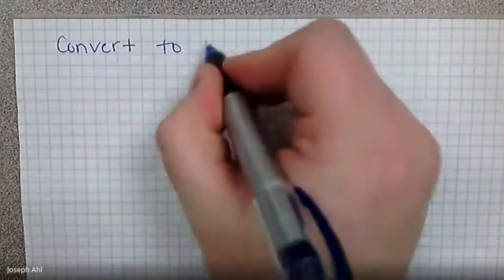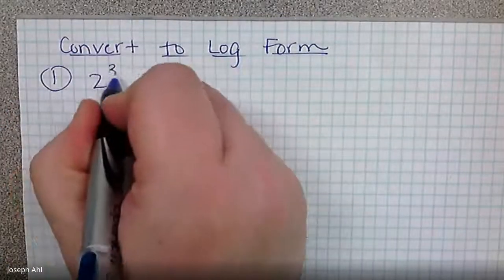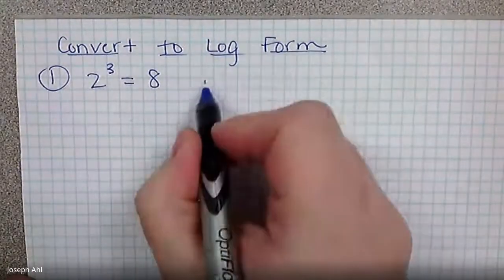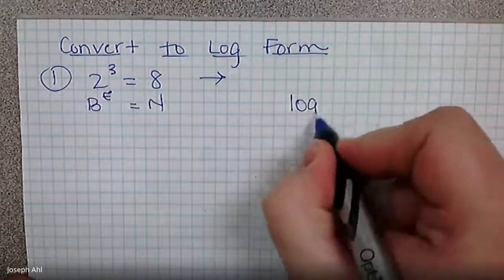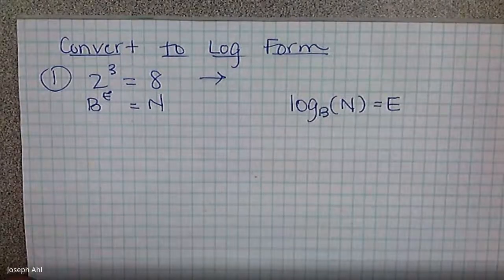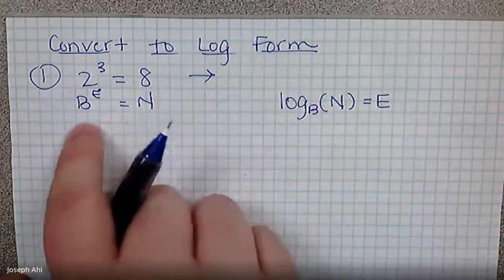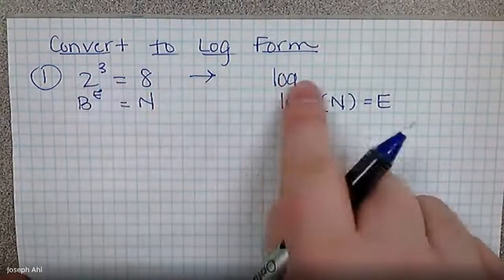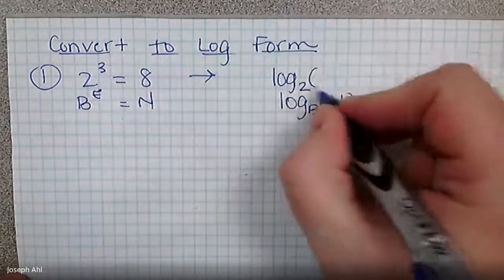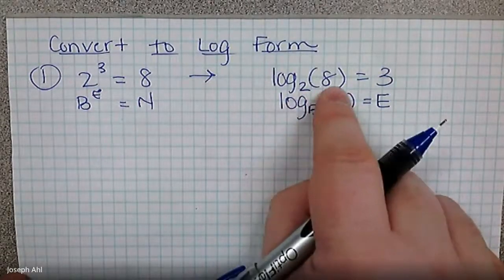Let's practice converting to log form. If I give you two cubed equals eight — two to the third power is in fact eight — what does that look like in log form? The base of the exponential becomes the base of the log. This is sometimes helpful to remember as BEN form for exponential and BENNY for log form. So it would be log base two of eight equals three. The interpretation is that three is the exponent to which we raise base two in order to get eight.